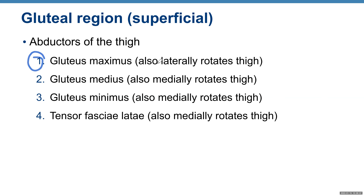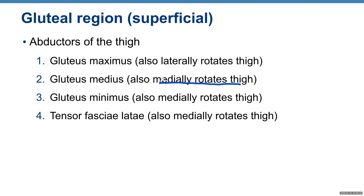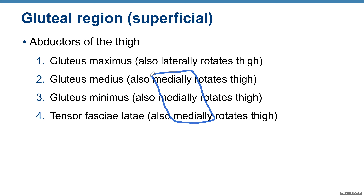Gluteus maximus also laterally rotates the thigh. Gluteus medius medially rotates the thigh, and it's also an abductor. Gluteus minimus also medially rotates the thigh, and tensor fascia lata also medially rotates. So we have one muscle — gluteus maximus — that laterally rotates; the rest of the superficial muscles abduct and medially rotate your thigh.